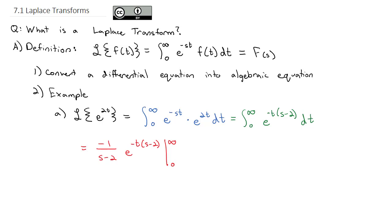We should technically integrate from 0 to b and take the limit as b goes to infinity, but we can work through what happens: plugging infinity into the exponent gives e to a negative huge number, which goes to 0. Then subtracting the lower limit — plugging 0 in for t gives e to the 0 power, which is 1 — we subtract a negative, making it plus 1 over s minus 2. So the Laplace transform of e to the 2t is 1 over s minus 2.